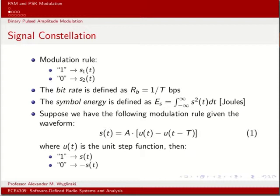Either S_1(t) for a case of 1, and S_2(t) in case of 0. We call this sort of mapping a modulation rule. We represent this mathematically in equation 1, where S(t) is equal to some amplitude — depending whether it's a 1 or 0 being transmitted — multiplied by a rectangular wave, that is, two unit step functions subtracted from each other.